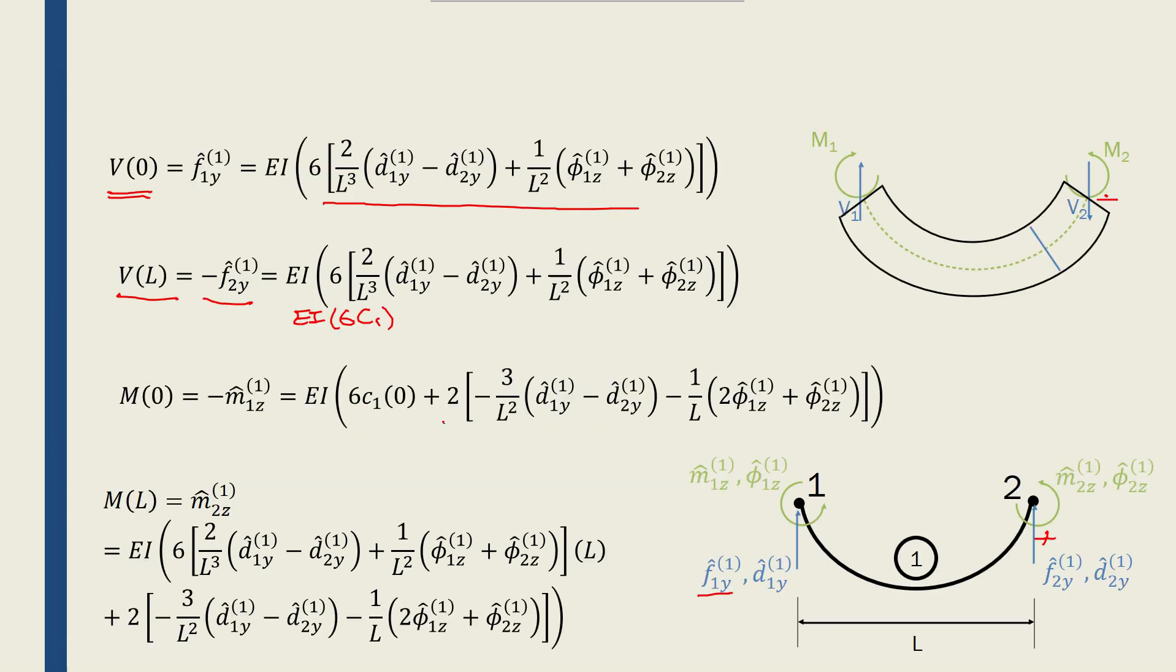So if we take a look at there, M(0) would be equal to minus m1z. Again, here is counterclockwise, which is positive, but m1 is clockwise. It's negative.